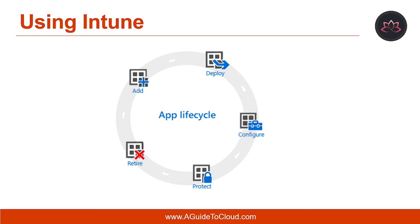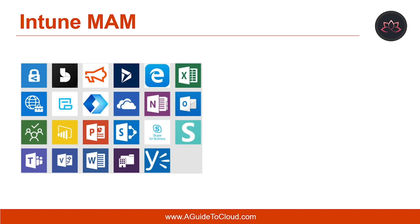You cannot manage the device itself when it is not enrolled. For example, you can prevent copying information between a business-related app and a private app; however, you cannot manage the device using MDM. Intune Mobile Application Management refers to a suite of Intune management features that lets you publish, push, configure, secure, monitor, and update mobile apps for your users. MAM protects company data within an application, and many productivity apps such as Microsoft Office apps can be managed by Intune MAM.